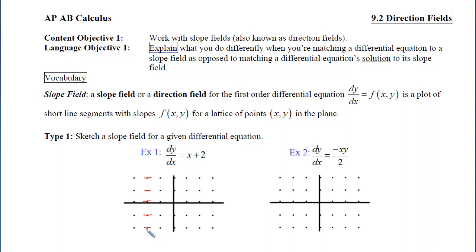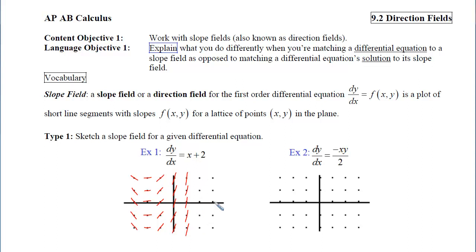If I move to the right, the x-coordinates are negative 1. Negative 1 plus 2 gives a slope of positive 1, so I draw segments with slope 1. Moving to the left, x equals negative 3 gives negative 3 plus 2, a slope of negative 1. As x becomes larger and larger, the slopes become steeper and steeper — slopes of 2, then 3, then 4, and so on.